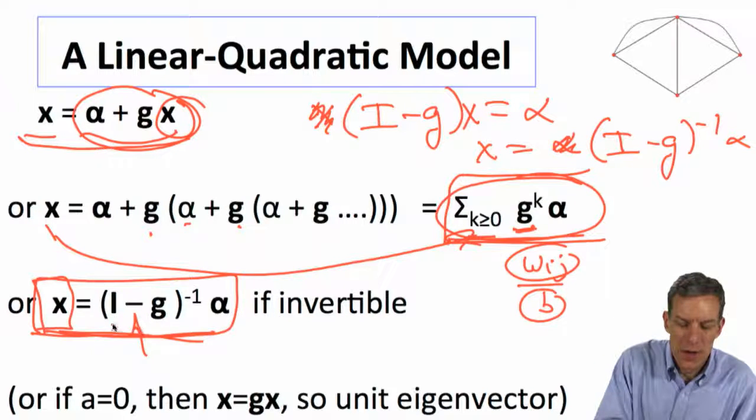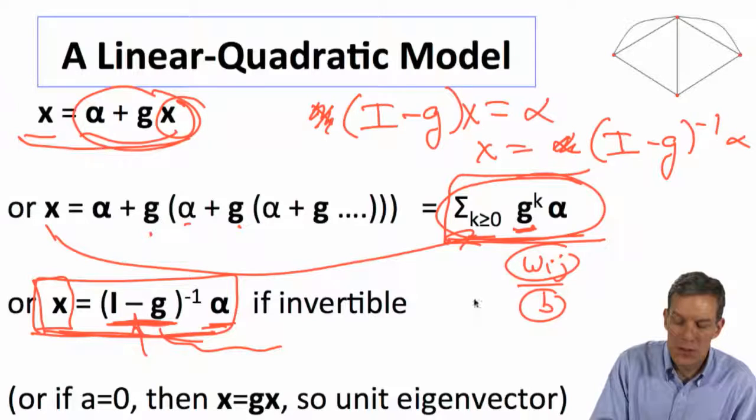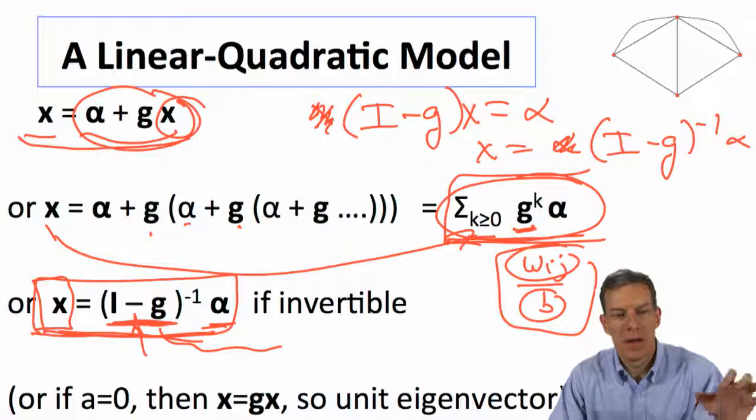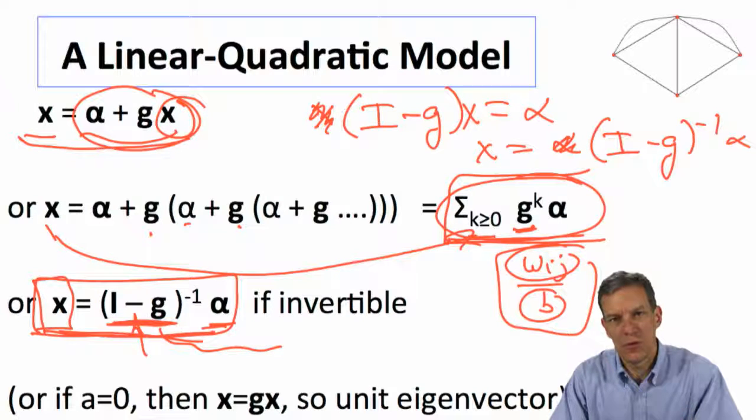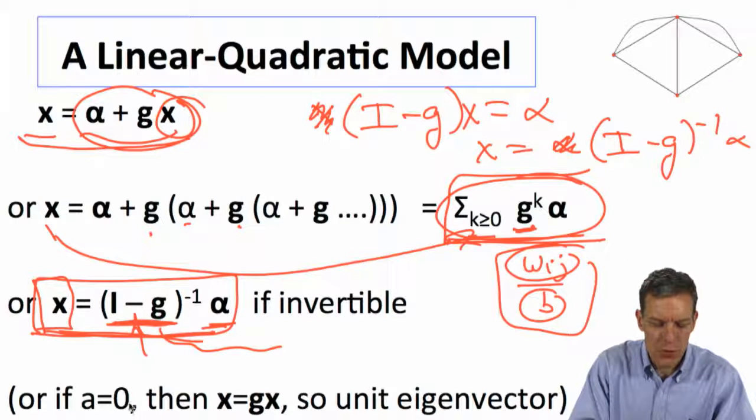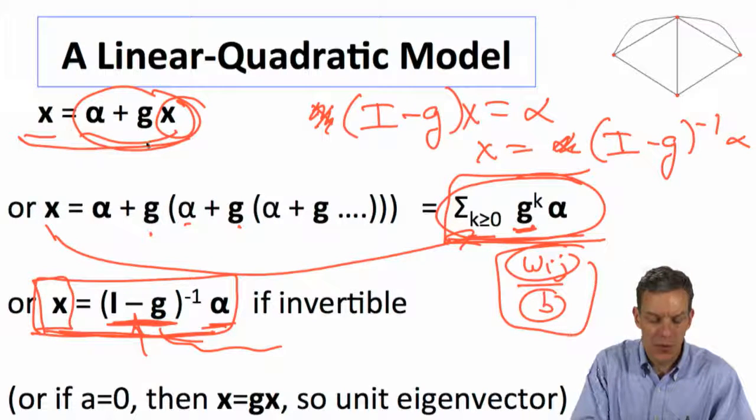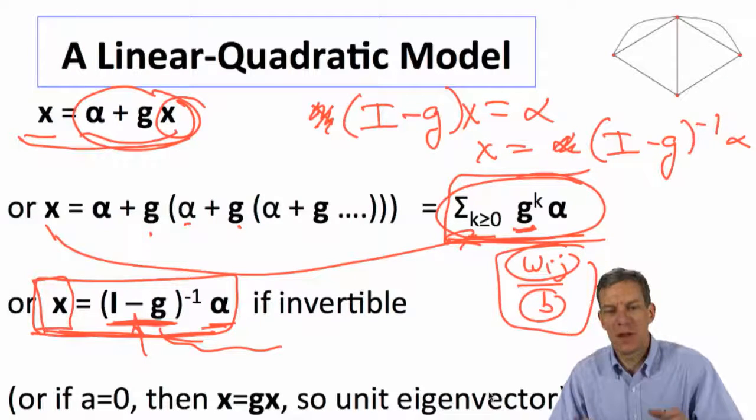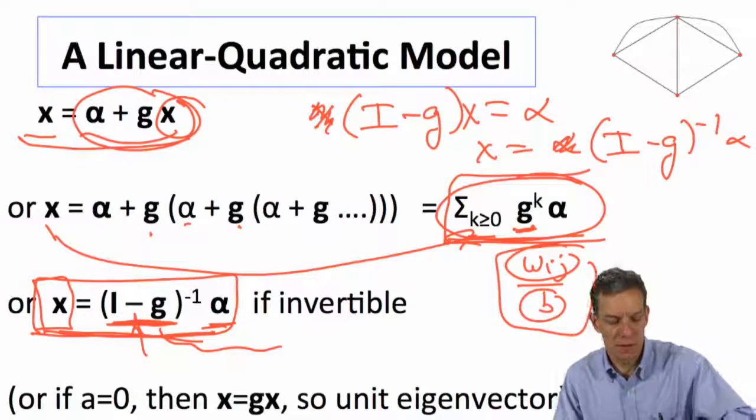Okay, so we have a very nice solution. We can find x now directly as a function of the parameters of the game, the a and b's, and this g matrix, which is the wijs and the b's. So we have a very simple game. It ends up giving a nice solution where we can calculate the actions of every player as a function of the network structure and the payoff structure. Now if a is equal to 0, then we end up with x equals gx, so then it's just a unit eigenvector, so then we end up with a solution which is just an eigenvector calculation.